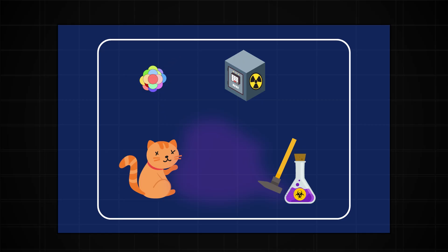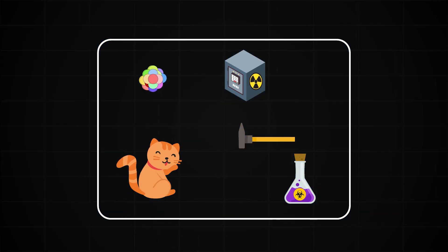If the atom doesn't decay, the detector stays silent, no poison is released, and the cat remains alive. And this is where things get weird. According to quantum mechanics, the atom isn't simply in one state or the other. It exists in a superposition of both decayed and not decayed at the same time.